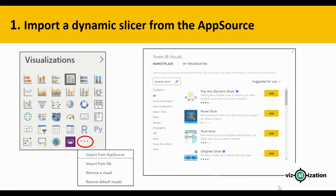Let's go back to Power BI Desktop. For the first step, we need to import a dynamic slicer from the AppSource. In the visualizations area, on the bottom right, we can see three dots. If we click that, we get a list — select 'Import from AppSource'. A new window pops up where we search for 'dynamic slicer', then select 'Play Axis' or 'Dynamic Slicer' and hit Add. After that, the dynamic slicer will appear in our Power BI Desktop window.